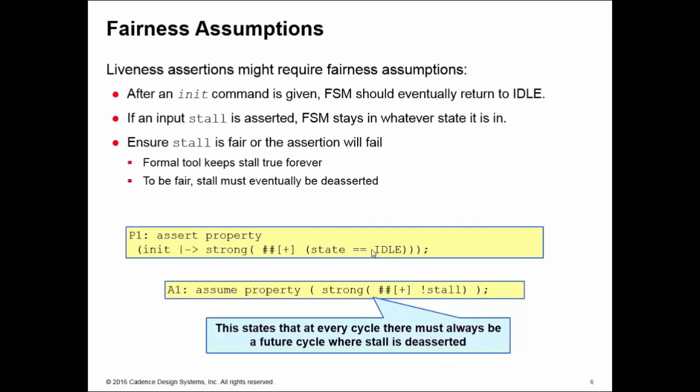When you see this kind of counterexample, you'll say to yourselves, well that's not fair. At some point I must release this stall signal in order that the state machine can make some transitions. This is why it's called a fairness constraint. What we're saying here is assume property, and then we're given a sequence. That plus symbol means one to an infinite number of cycles. We're saying at every clock we evaluate this property, there is always a future cycle when not stall is true. And that's true for every cycle. So what this does is prevent the tool, the formal tool, from producing this infinite length counterexample with stall being held low.